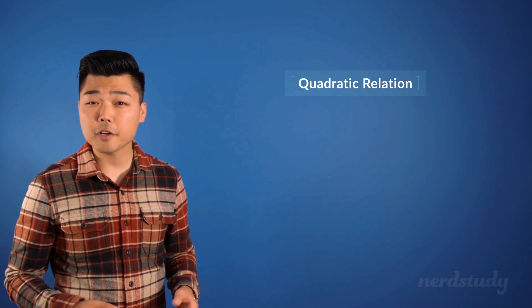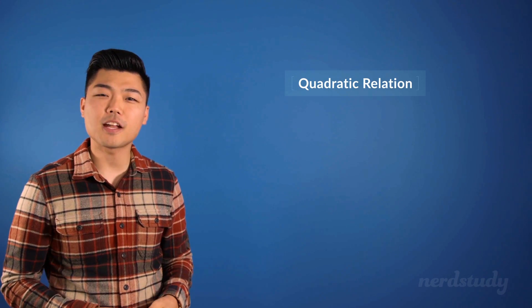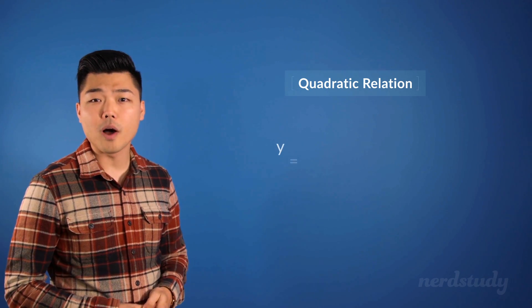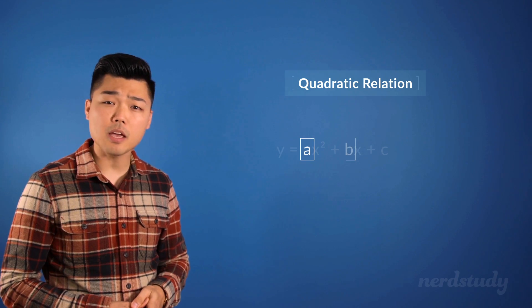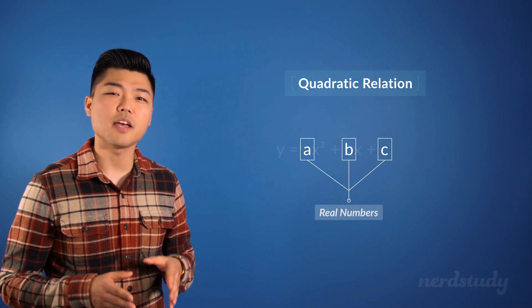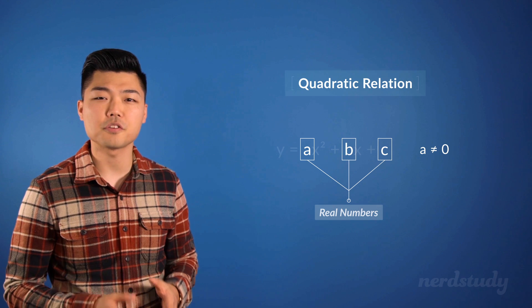A quadratic relation is a relation that has an equation in the following form: y equals ax squared plus bx plus c, where a, b, and c are real numbers and a is not equal to zero.